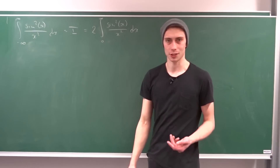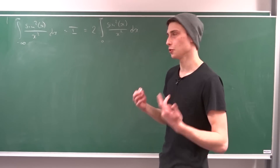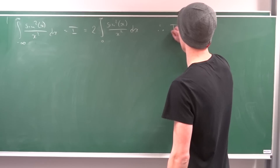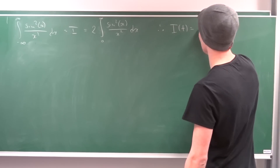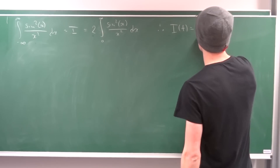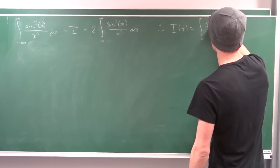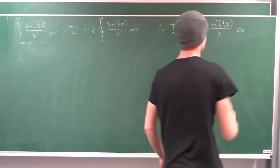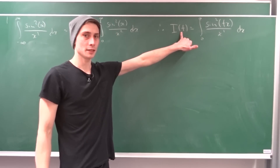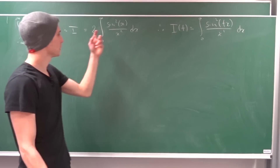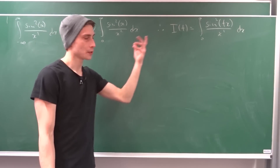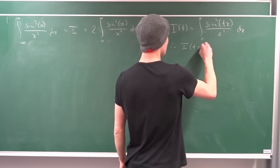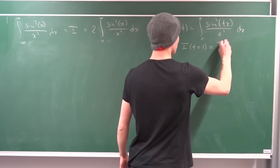So we want to use Leibniz integration on this one, which means we have to introduce a new parameter. We are going to call it t. So let I in terms of t be equal to the integral from zero to infinity of sine squared of tx over x squared dx. And as you might notice, I in terms of t equals one is one half times I. So we need to use this fact later — I at t equals one is equal to I over two.